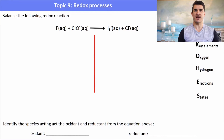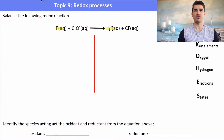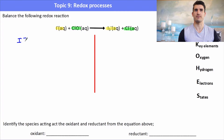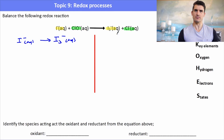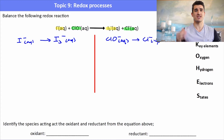For the second example we go through the same process — identify the two half equations first, balance them, then combine. We have one half equation with iodine and the other with chlorine. So we have I- (aq) going to I3-, and ClO- (aq) turning into Cl- (aq). We'll use the COHES method to balance both half equations.